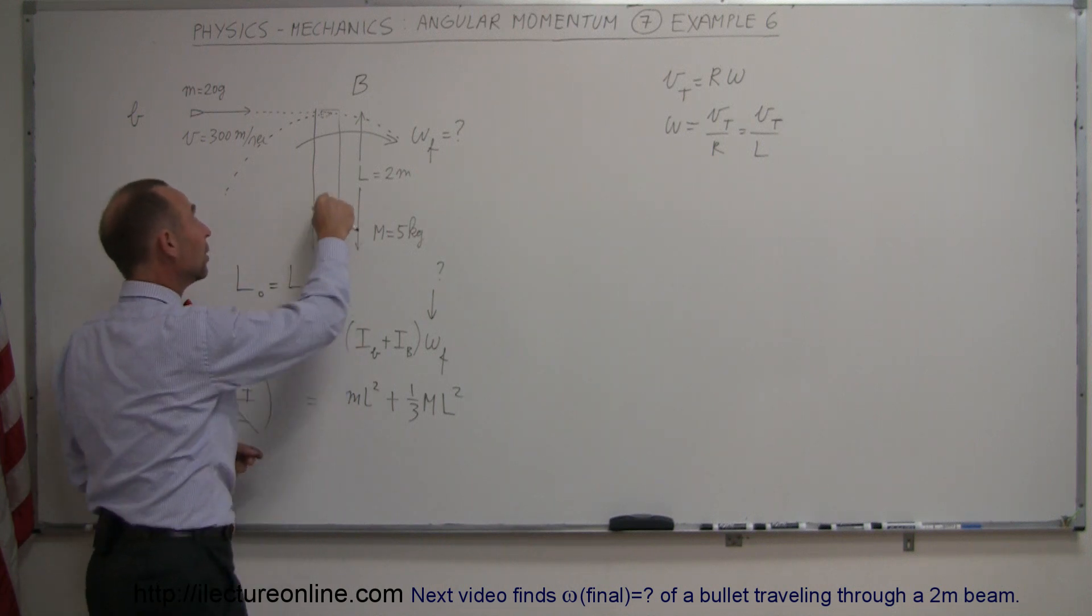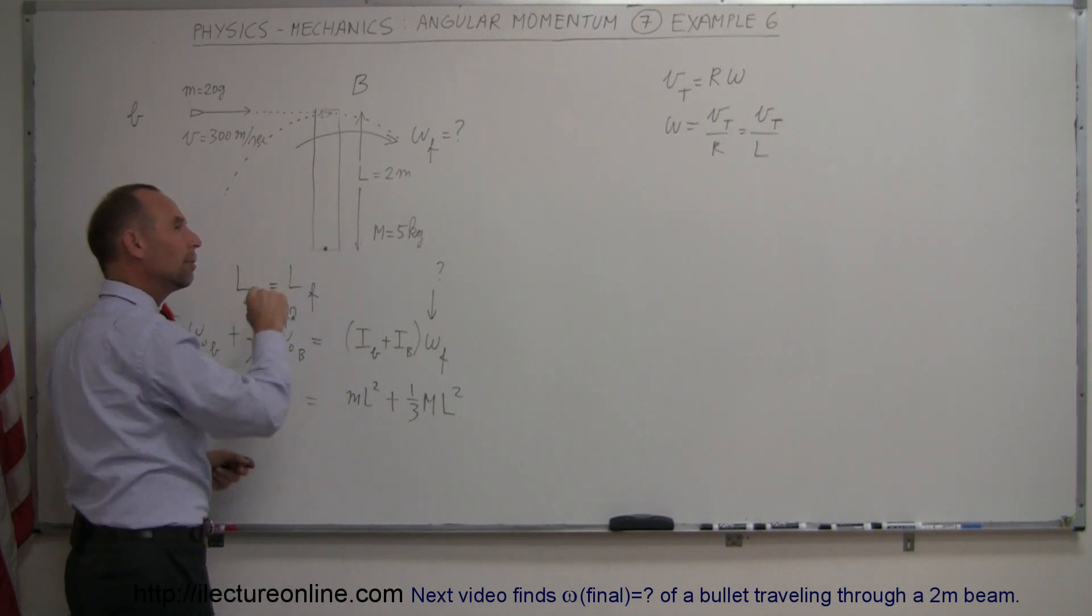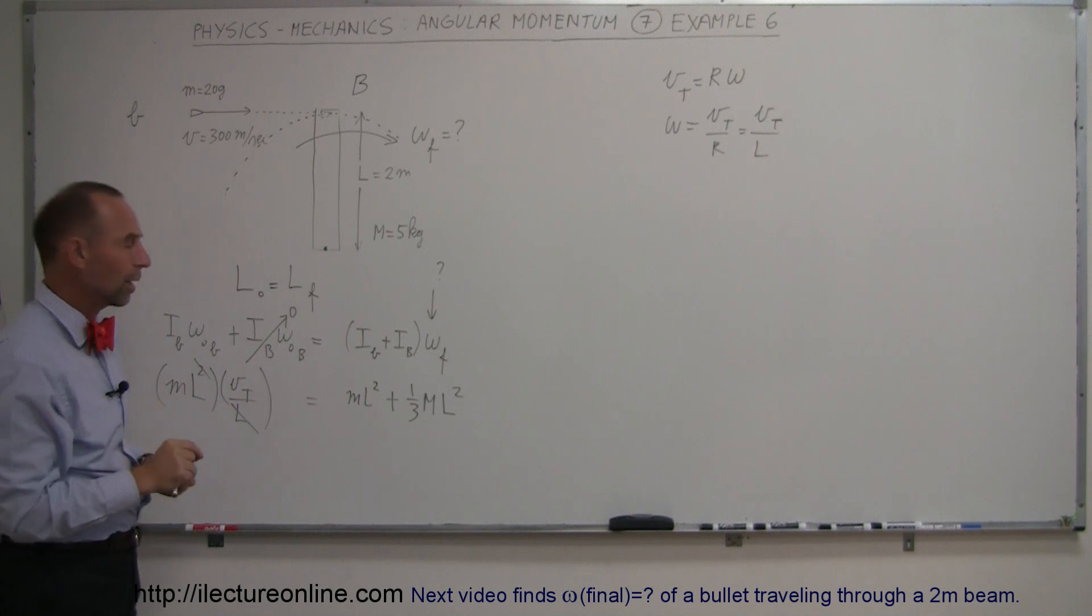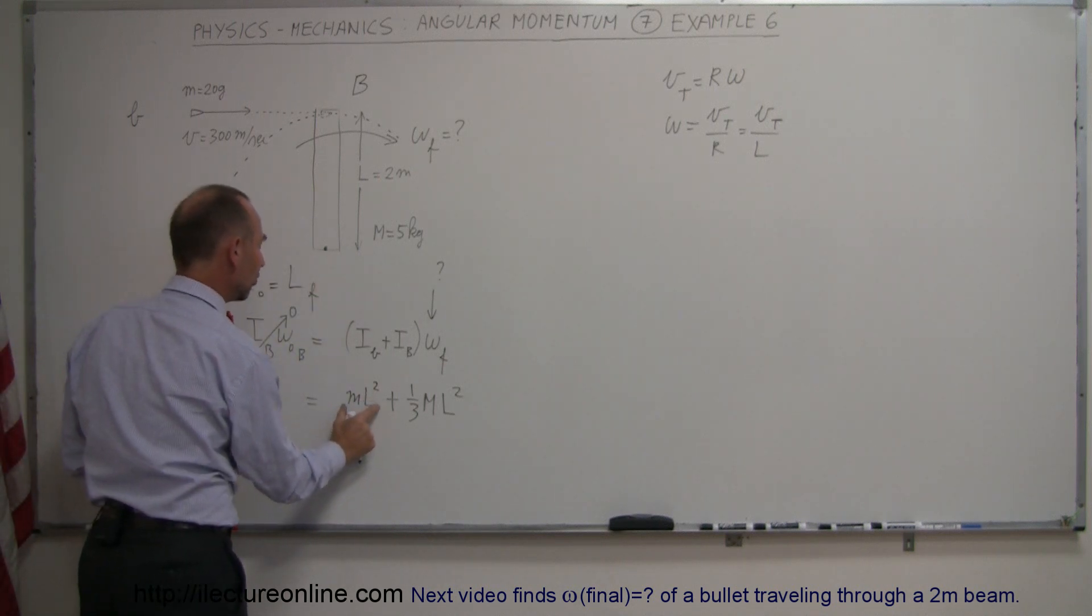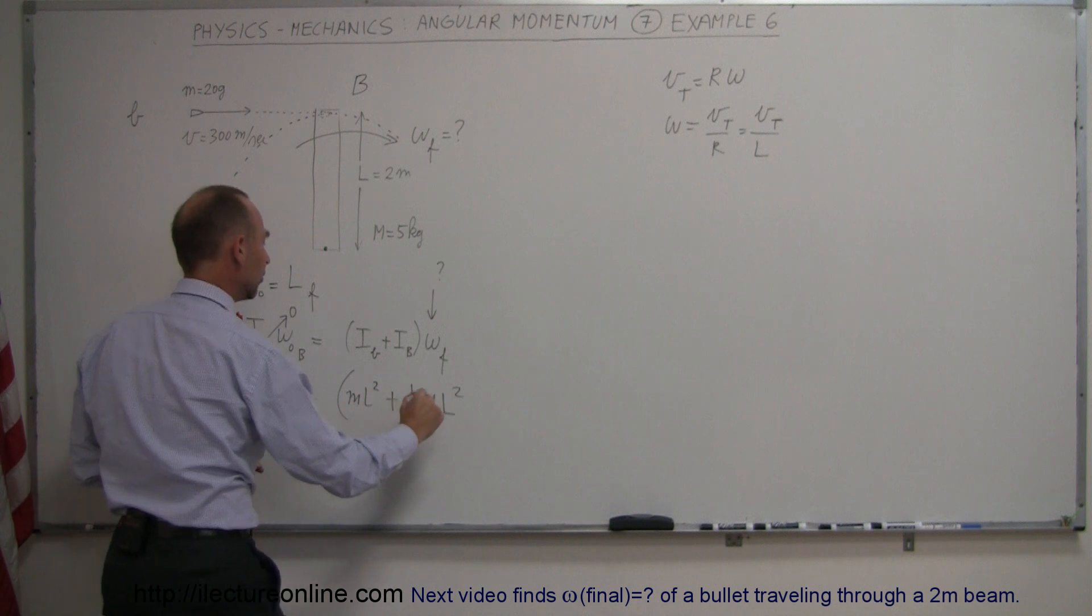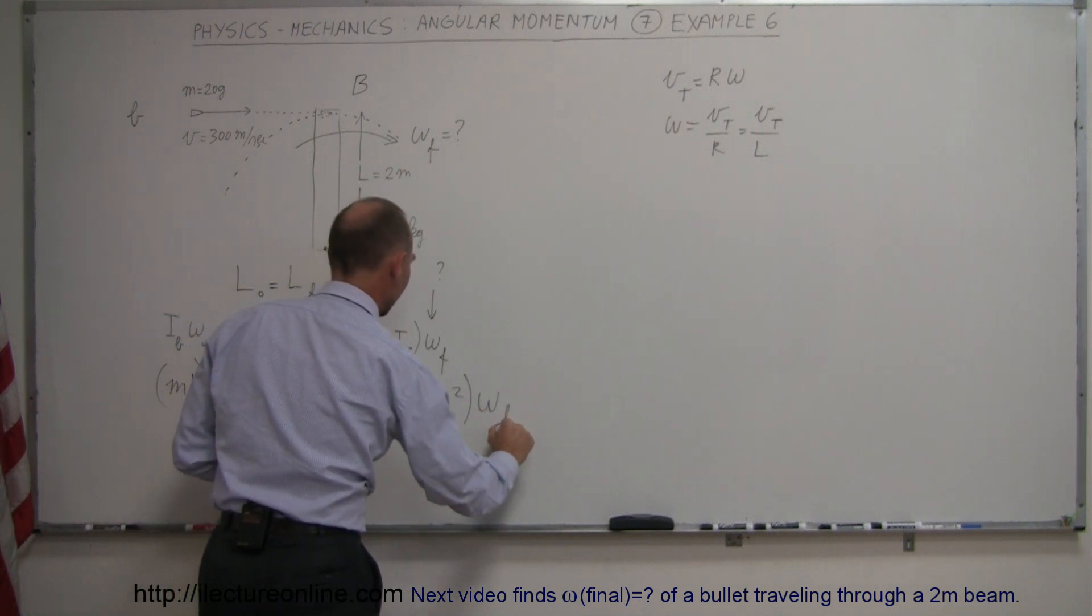Remember it would be one-twelfth ML squared when rotating about the middle, but in this case it would be one-third ML squared plus the moment of inertia of the bullet multiplied times omega final.